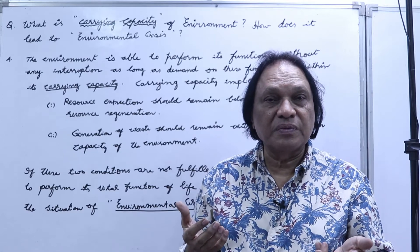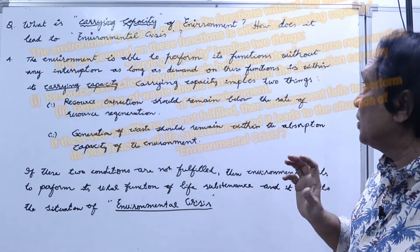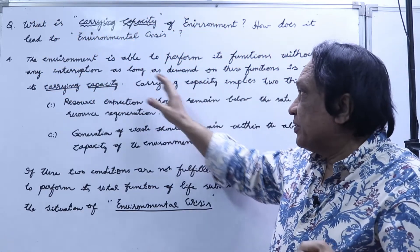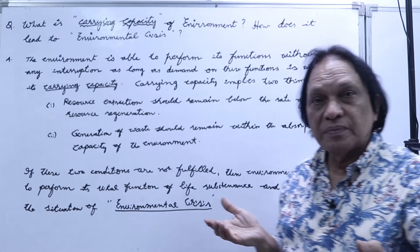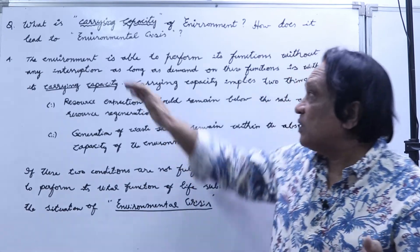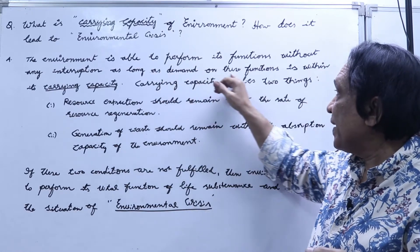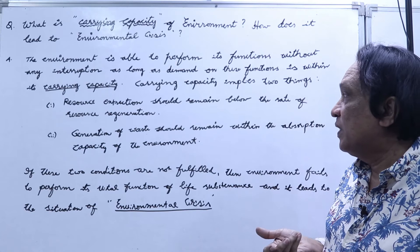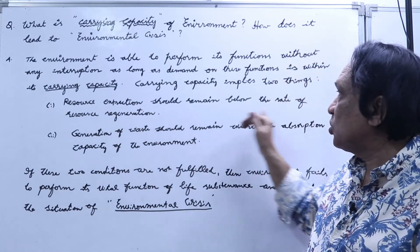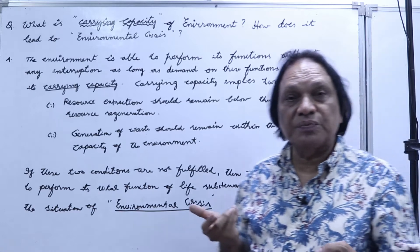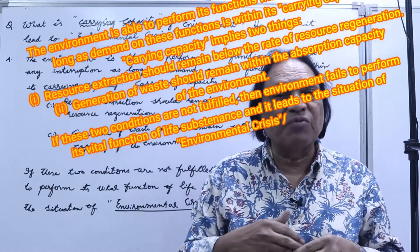Everyone has some carrying capacity; you can carry weight only up to certain limits, and beyond that you collapse. The environment is able to perform its functions without any interruption as long as the demand on these functions is within its carrying capacity. Carrying capacity implies two things. First, resource extraction should remain below the rate of resource regeneration. Suppose if we cut 10 trees, we should plant 20 so that the environment sustains and we always have trees.